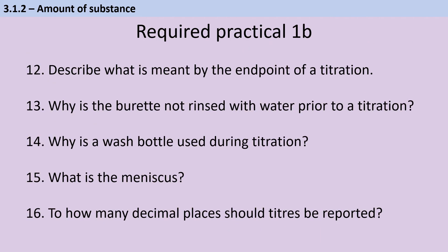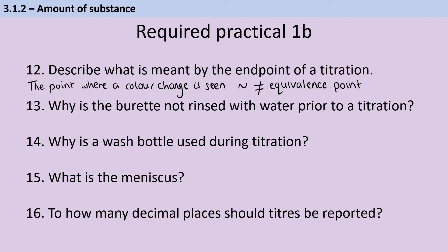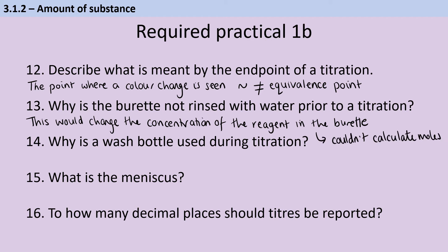The end point of the titration is where you see the first permanent colour change. Provided you've picked an appropriate indicator, that should coincide with the equivalence point — the point at which all of the solution in the conical flask has been neutralised. We can't rinse the burette with water because it would affect the concentration of the reagent, meaning we couldn't accurately calculate the moles used to neutralise the conical flask solution. The wash bottle ensures all solution that has left the burette makes it into the conical flask to participate in the reaction.